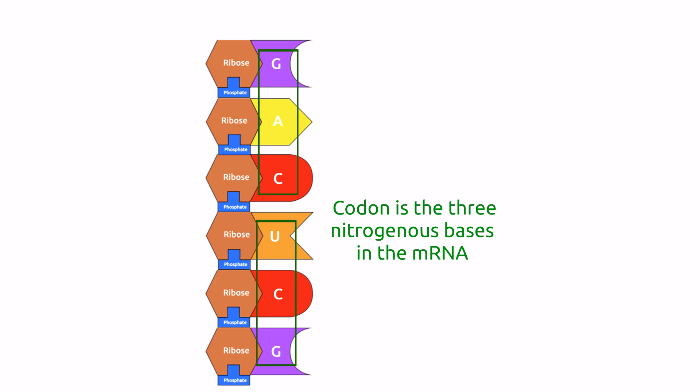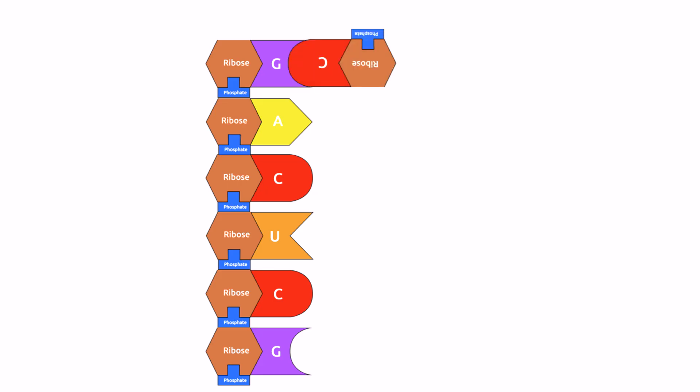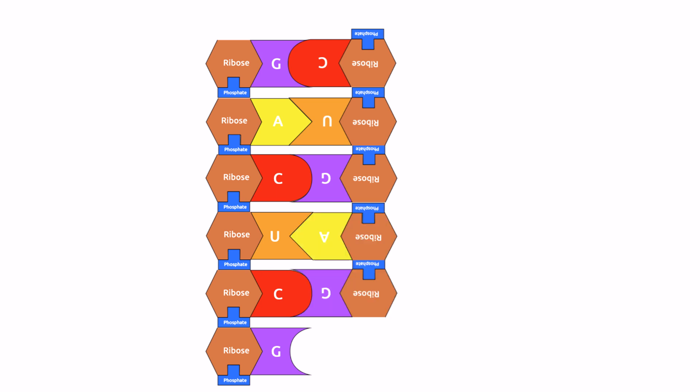We translate by adding the free nucleotides found in the cytoplasm. So we have, for guanine, we have cytosine; adenine, uracil; cytosine, guanine; uracil, adenine; cytosine, guanine; and guanine, cytosine.